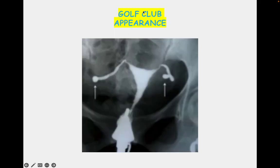Another finding is the golf club appearance, which is again because of fixed tubes. The tubes are fixed and blocked, with the ampulla getting dilated, giving the typical golf club appearance.